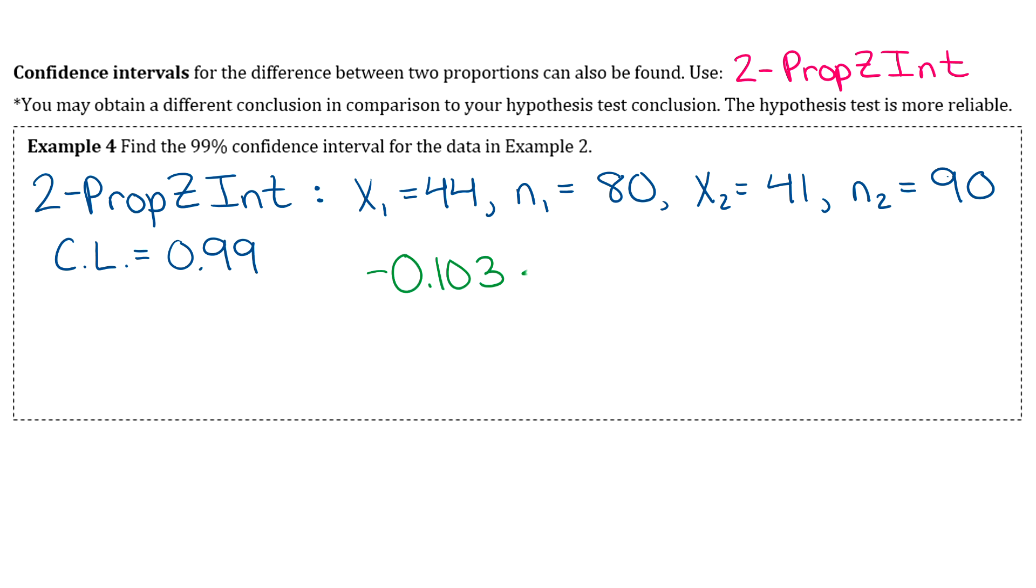Then you'll calculate that and you should get -0.103 as your lower bound and 0.2915 as your upper bound.